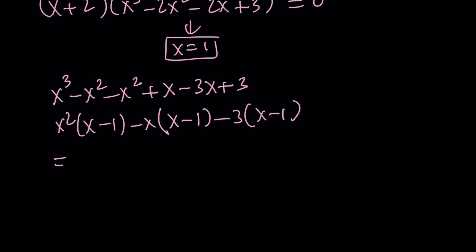And this is going to give us x minus 1 as a common factor, obviously. And this is going to be written as x minus 1 times x squared minus x minus 3 equals 0. Great. So we were able to factor the cubic as well, which is nice.